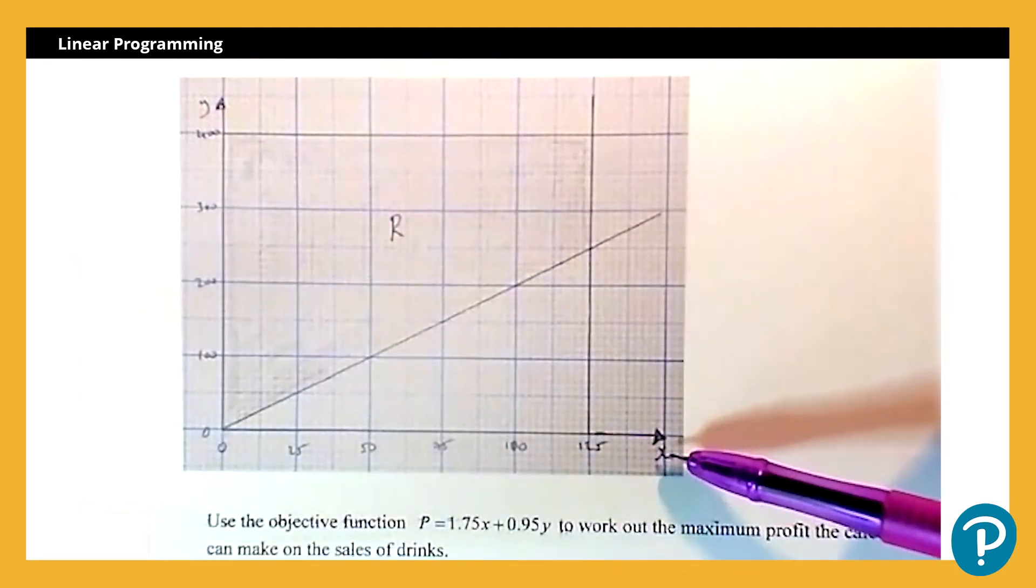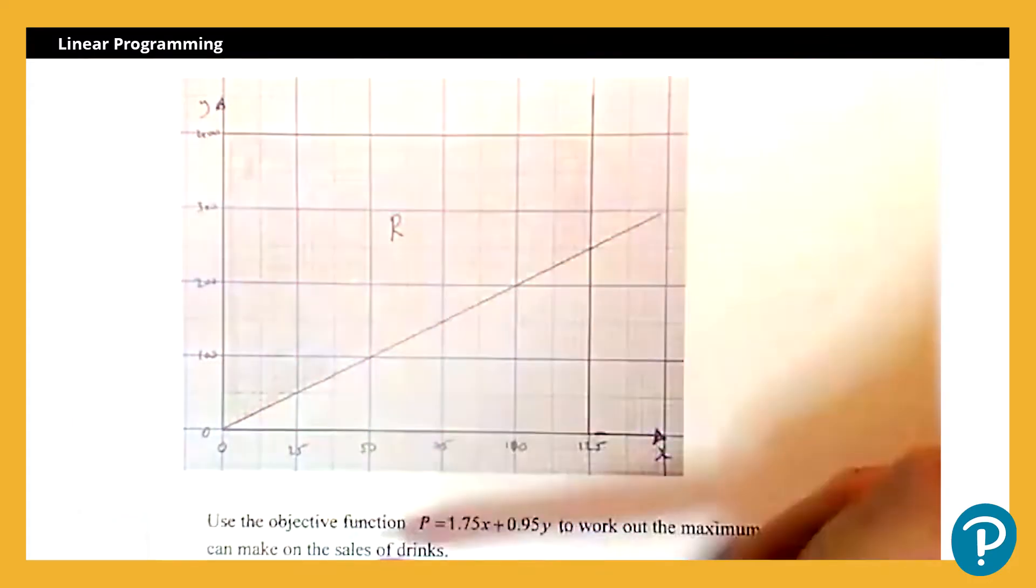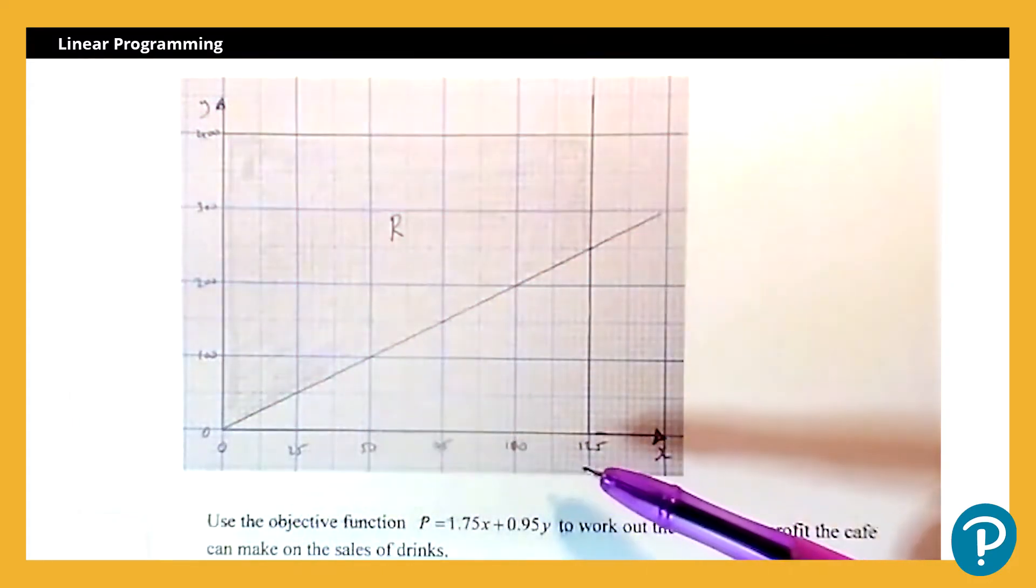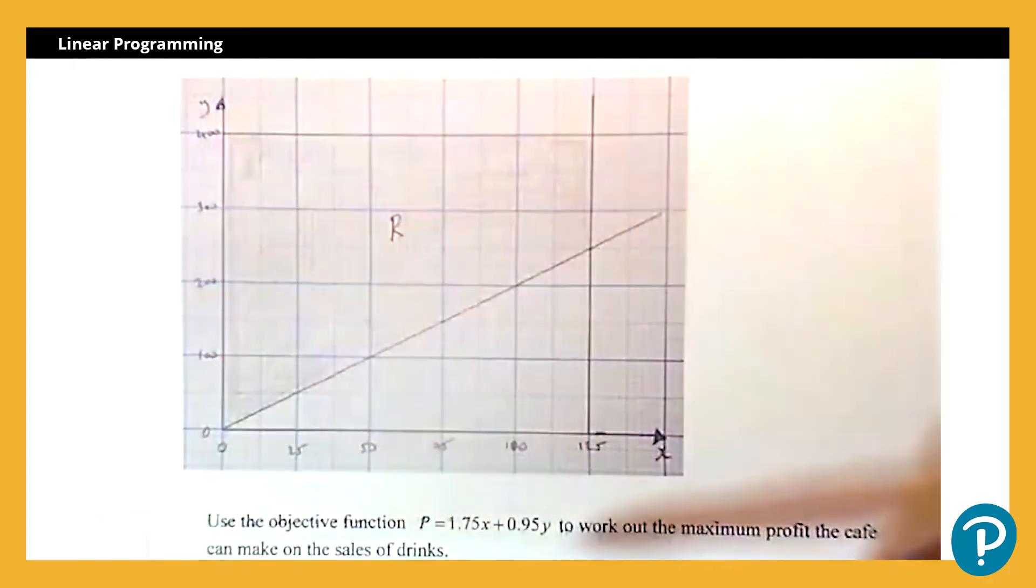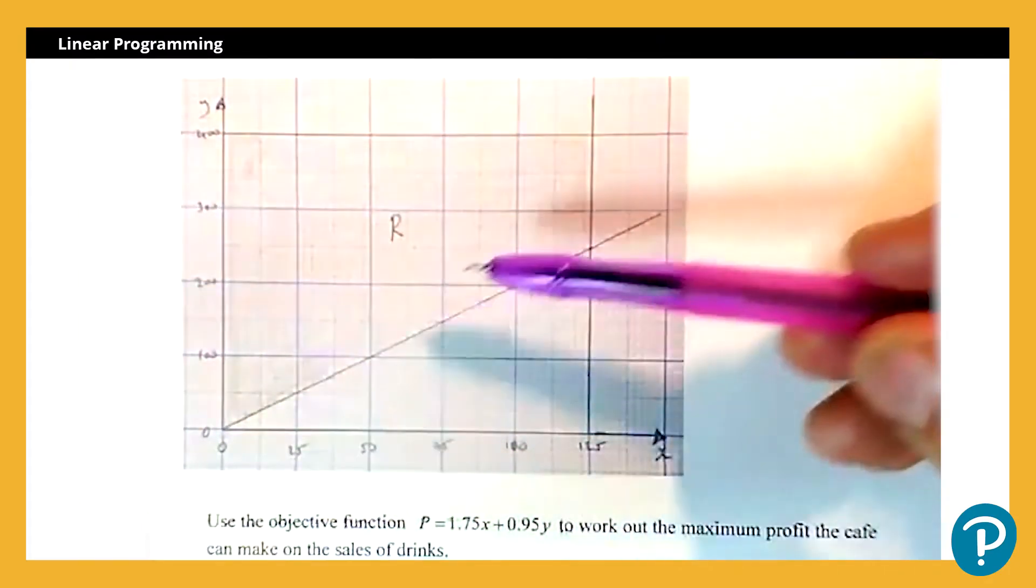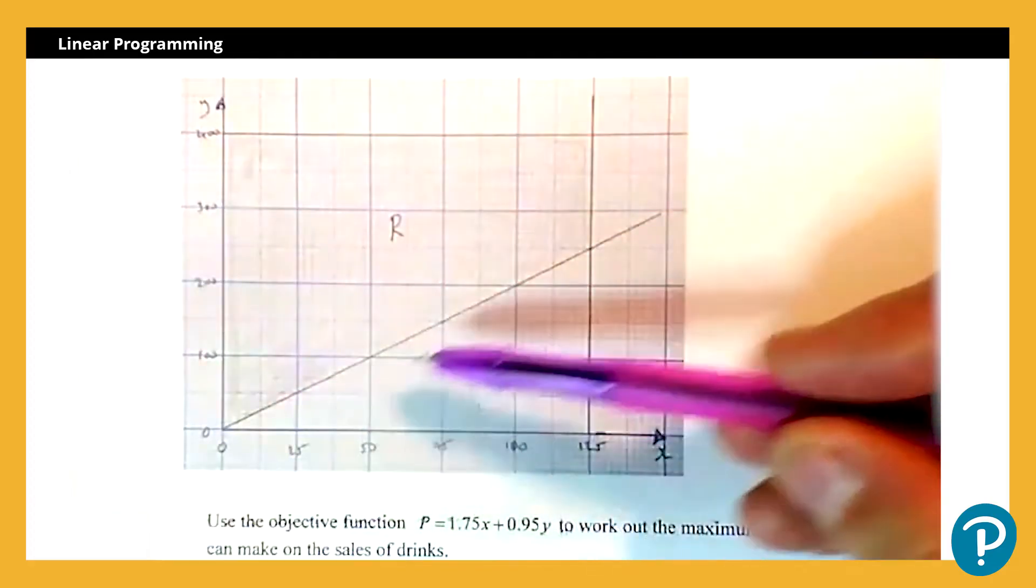So x is the number of hot drinks, y is the number of cold drinks. The x-axis is going up in 25s, the y-axis is going up in 100s. You can just see here we've got the feasible region which is this shaded area at the top.